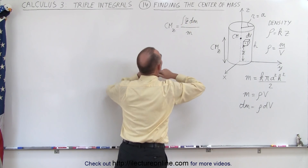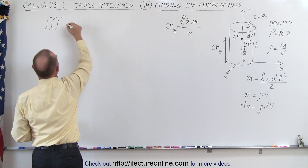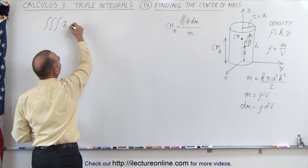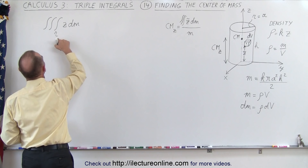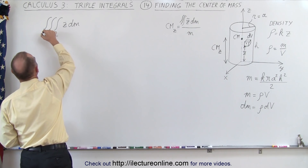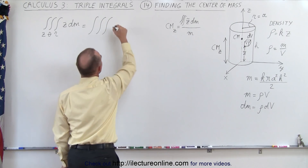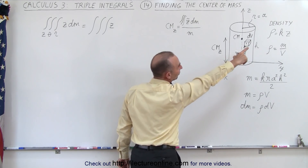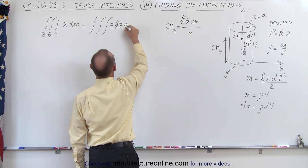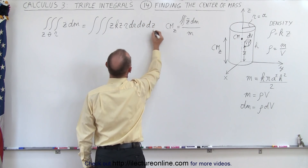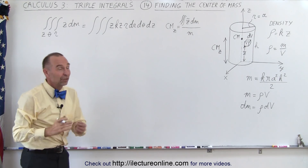We're going to find the numerator using a triple integral. The triple integral is: z times dm, integrated in cylindrical coordinates over radius, angle all the way around the cylinder, and height z. dm equals density times dv, and the density is k times z. So the integrand becomes z times k times z times r dr d-theta dz — that is, k z squared r dr d-theta dz.